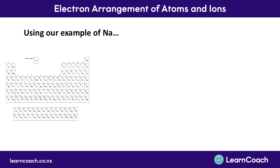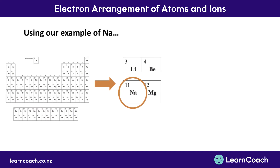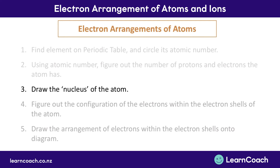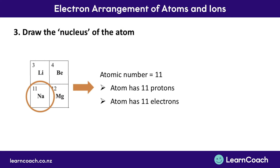Going back to our example of sodium, we've found that sodium has an atomic number of 11, and therefore we know that a sodium atom must have 11 protons as well as 11 electrons. This means we can move on to step 3, which involves drawing the nucleus of the atom. All you need to do is draw a circle and write inside it the number of protons that the atom has. In our example of sodium, we draw a circle and write 11 protons within it — that corresponds to our nucleus. It's a good idea in your exam to also label this as the nucleus to avoid any confusion for your marker.